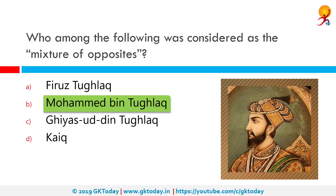One example is that he stopped minting gold coins and started using copper or bronze coins. At that point in time, people were used to valuing gold, so when the composition of the coin suddenly changed, people no longer valued it. These kinds of decisions earned him the name 'Mixture of Opposites'.